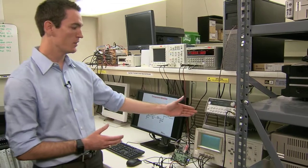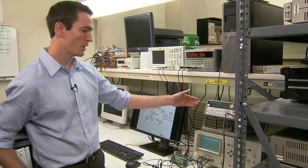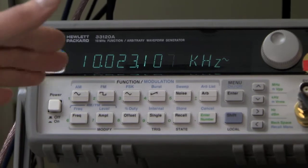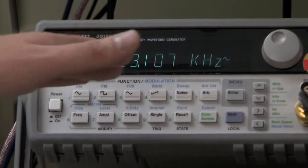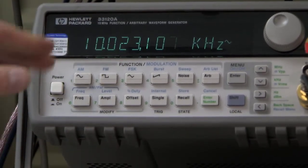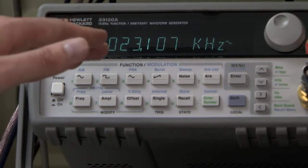If we go up to the input frequency, we have a function generator generating right around 10 kHz, and we have these extra numbers which Luke will show you why this is later on.